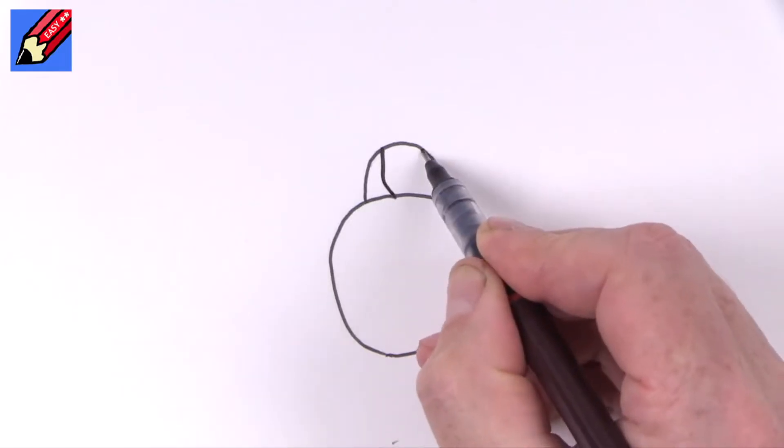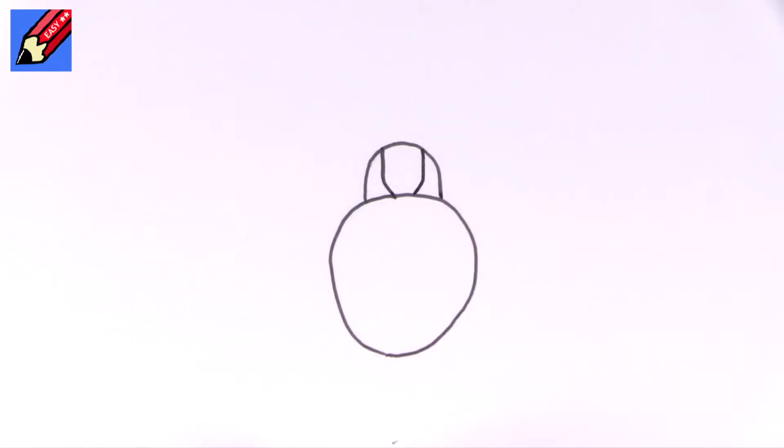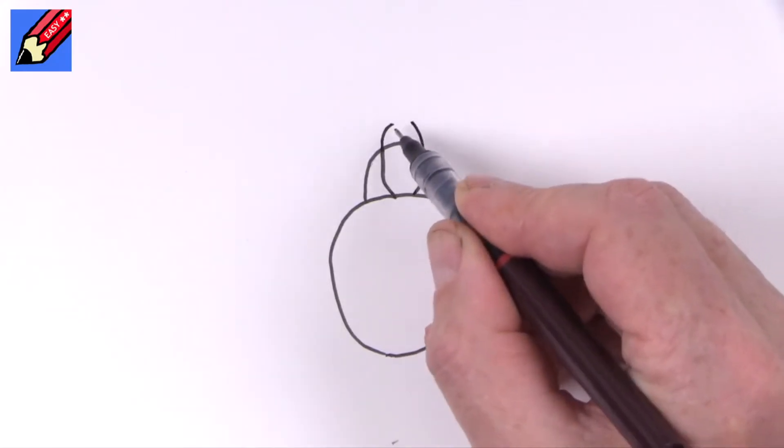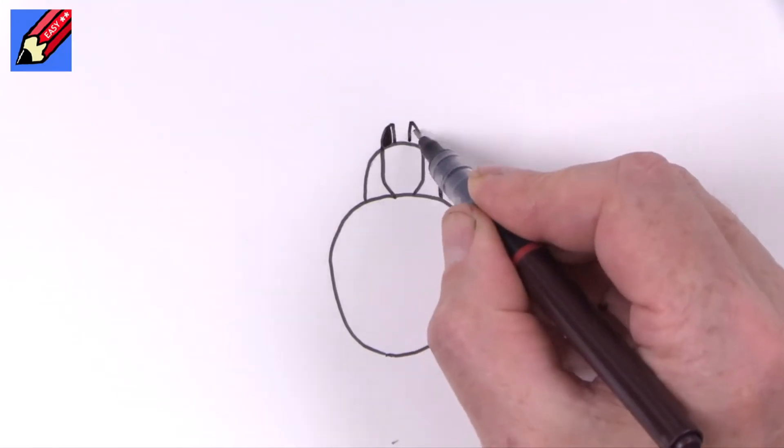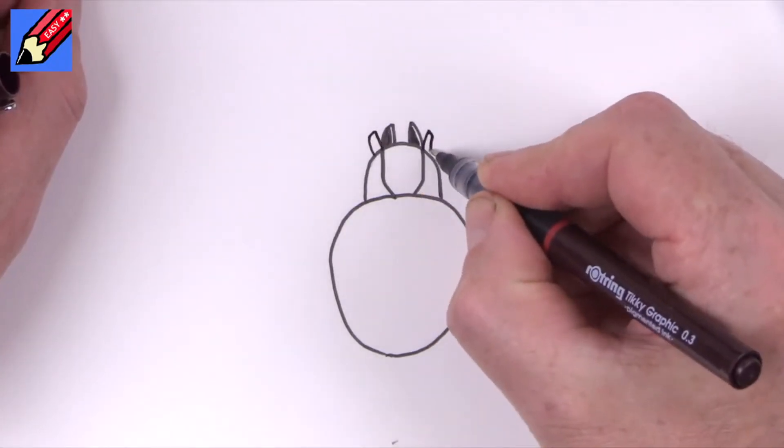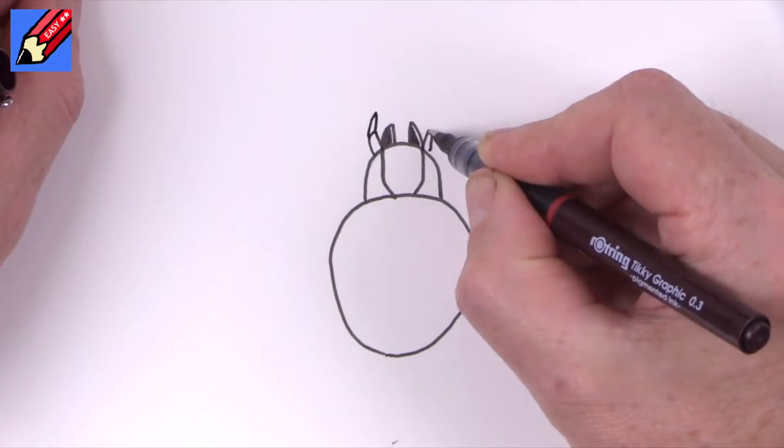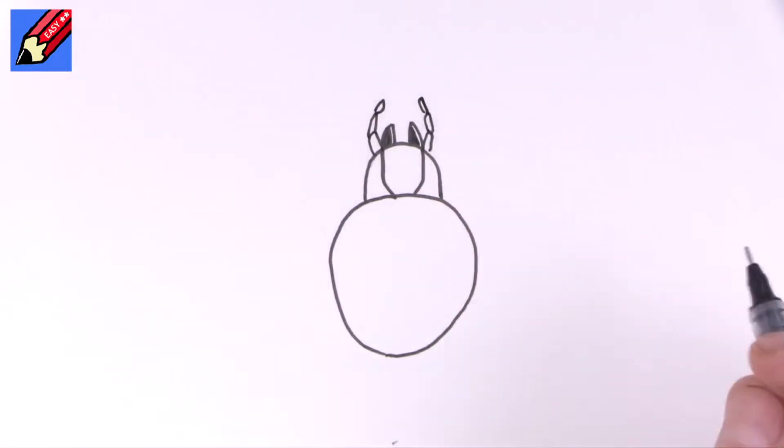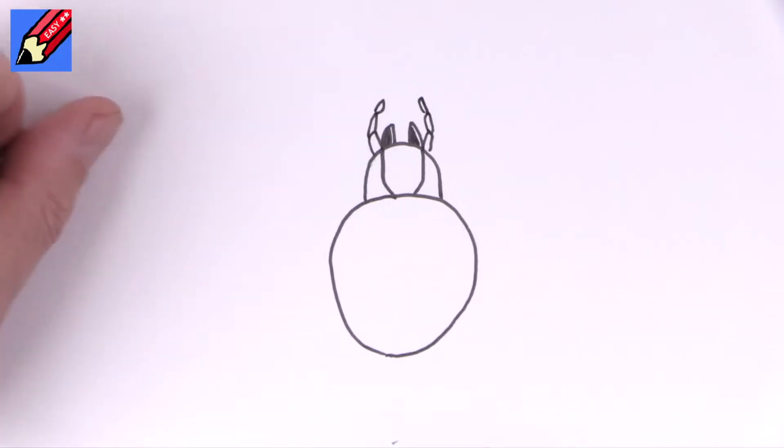And then here I'm going to come down and in, down and in like that. Then that will curve up there, bring it straight back. So these are the fangs at the front, and then we want the pedipalps, which are kind of the bits that hold down the prey while they're sucking all the juice out.